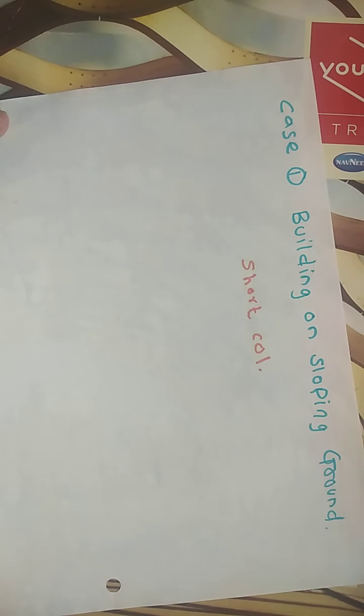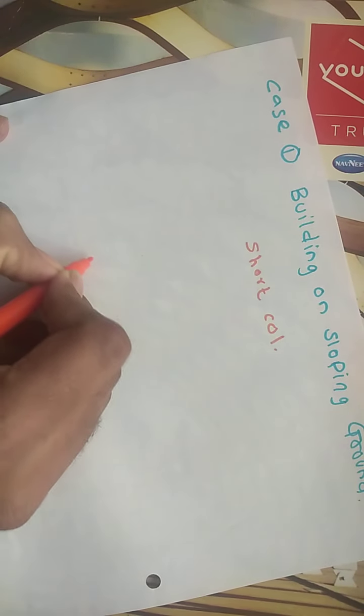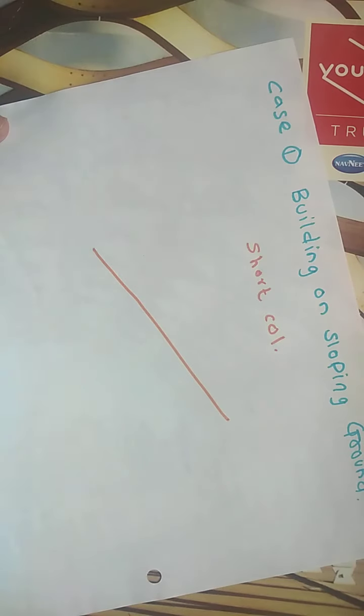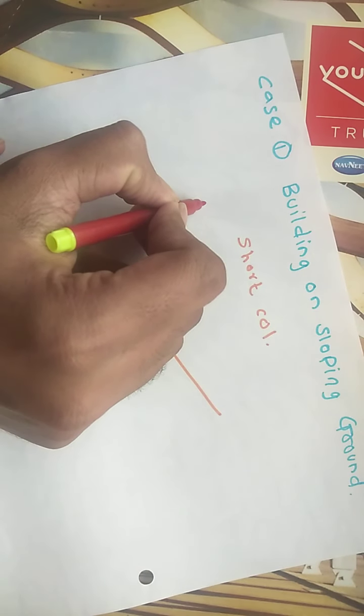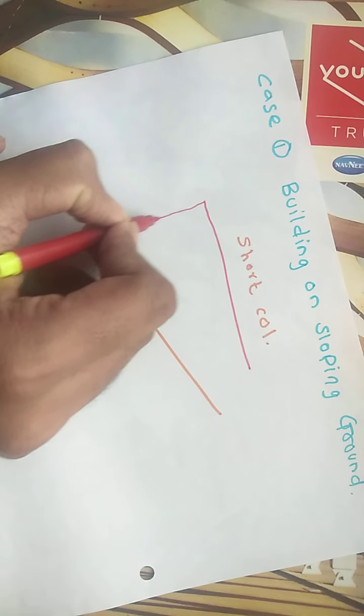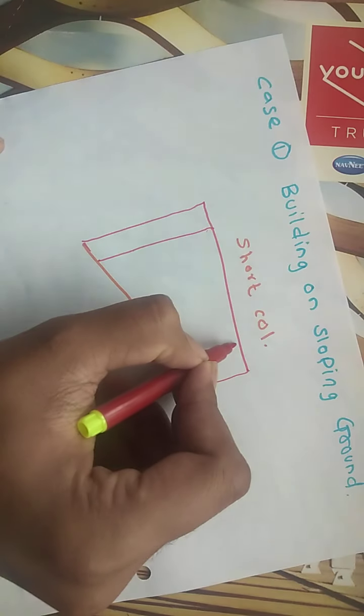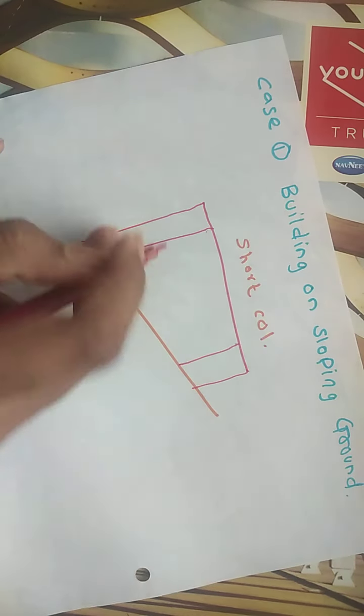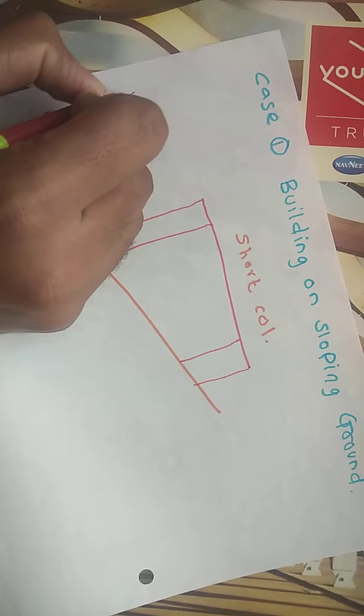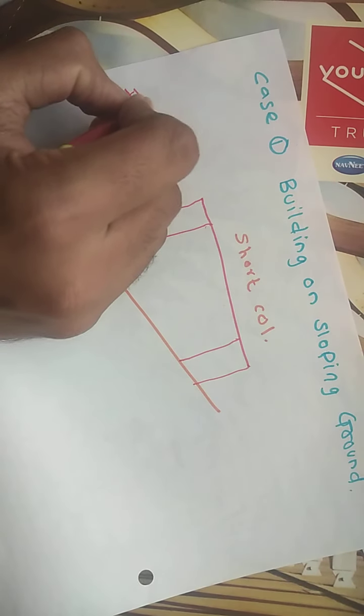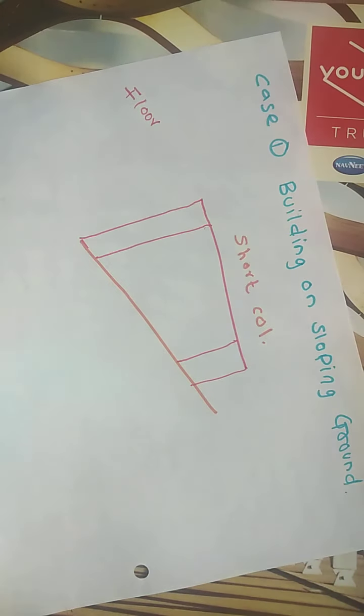We will discuss first building on sloping ground. Suppose you have a sloping ground like that. Now you have to build the building on that. Suppose this is the floor level and you have the column here and one column is here. Because of sloping on the same floor, we always talk for a particular floor only. On the same floor, this is a long column, this is a short column.